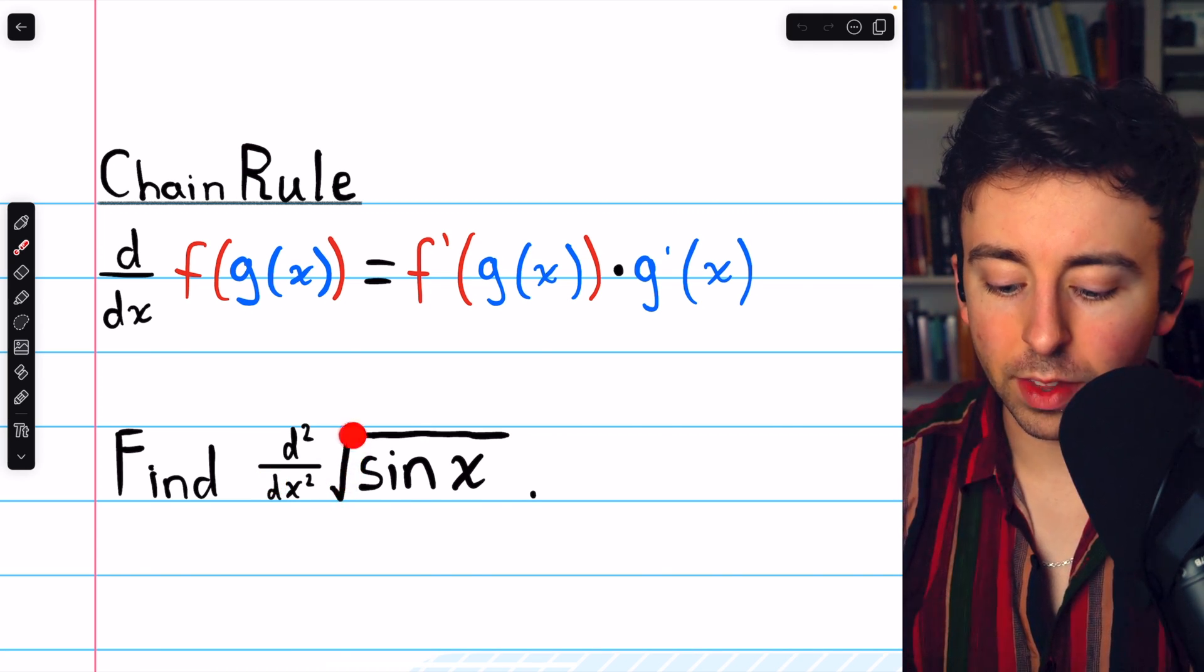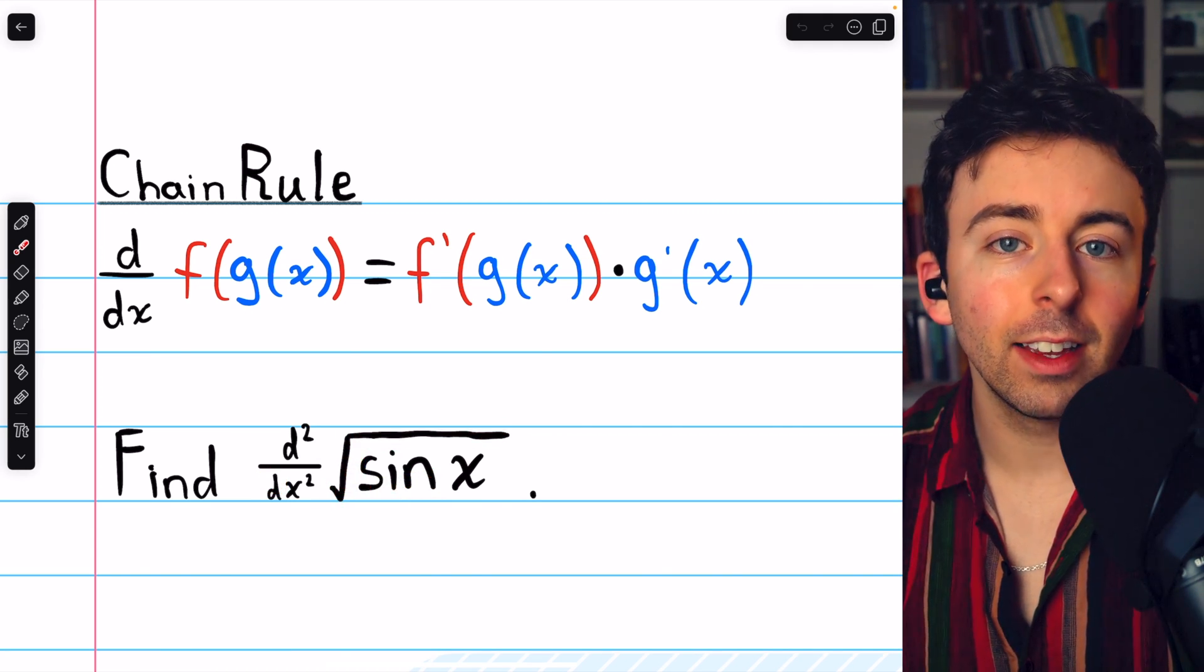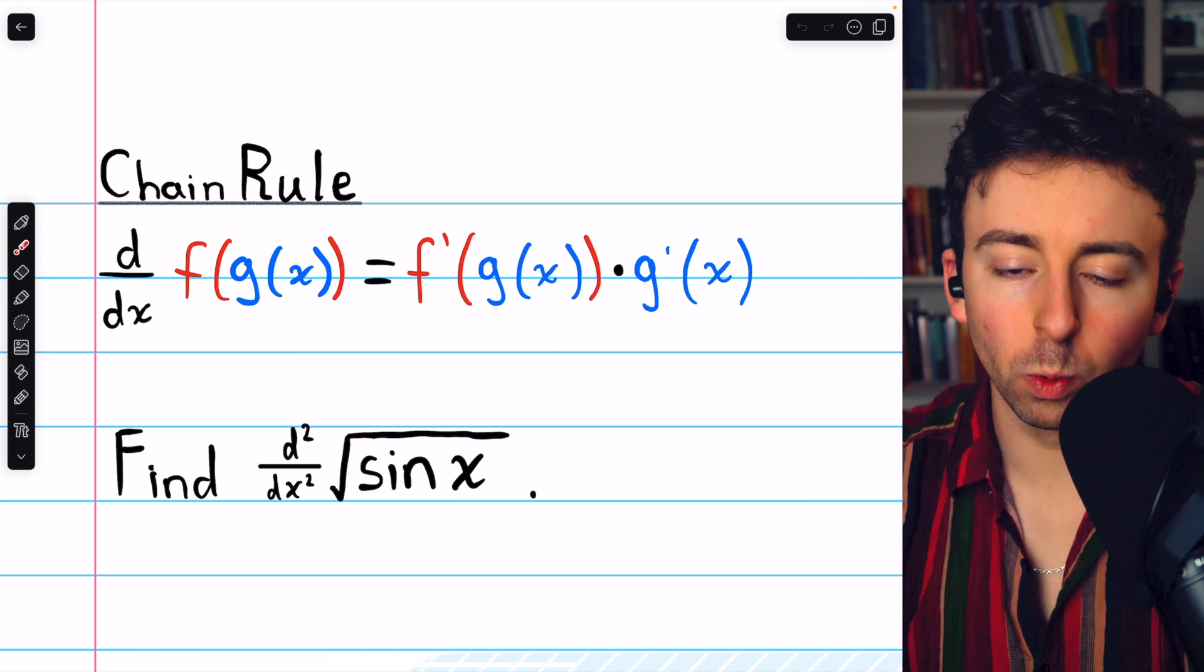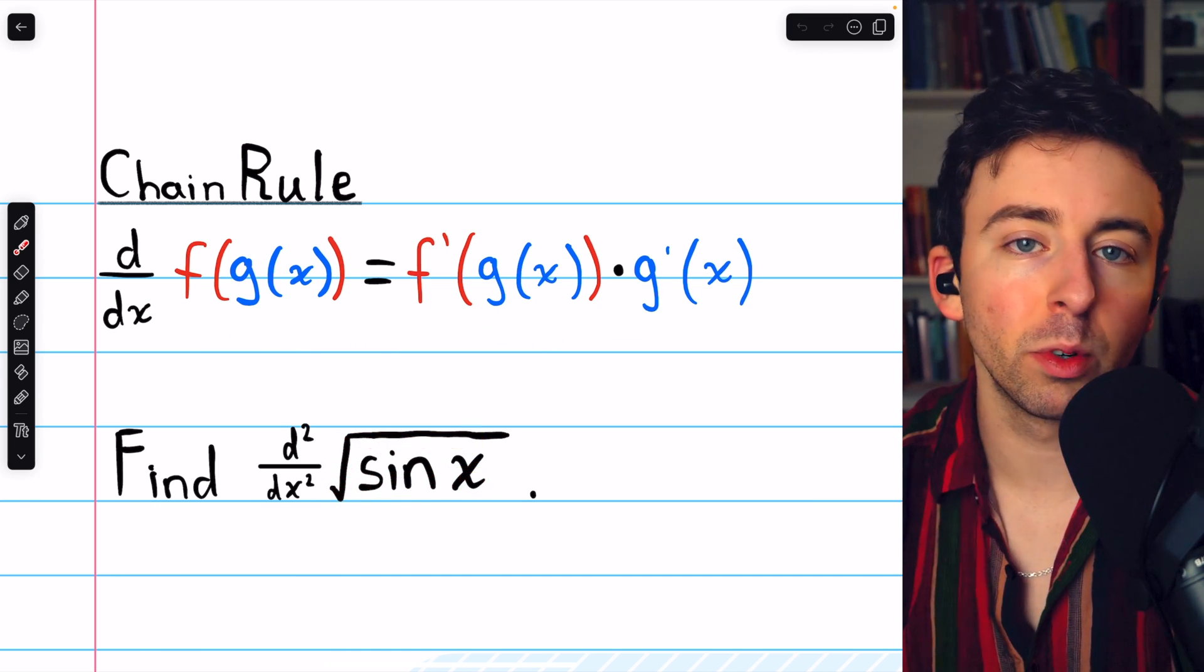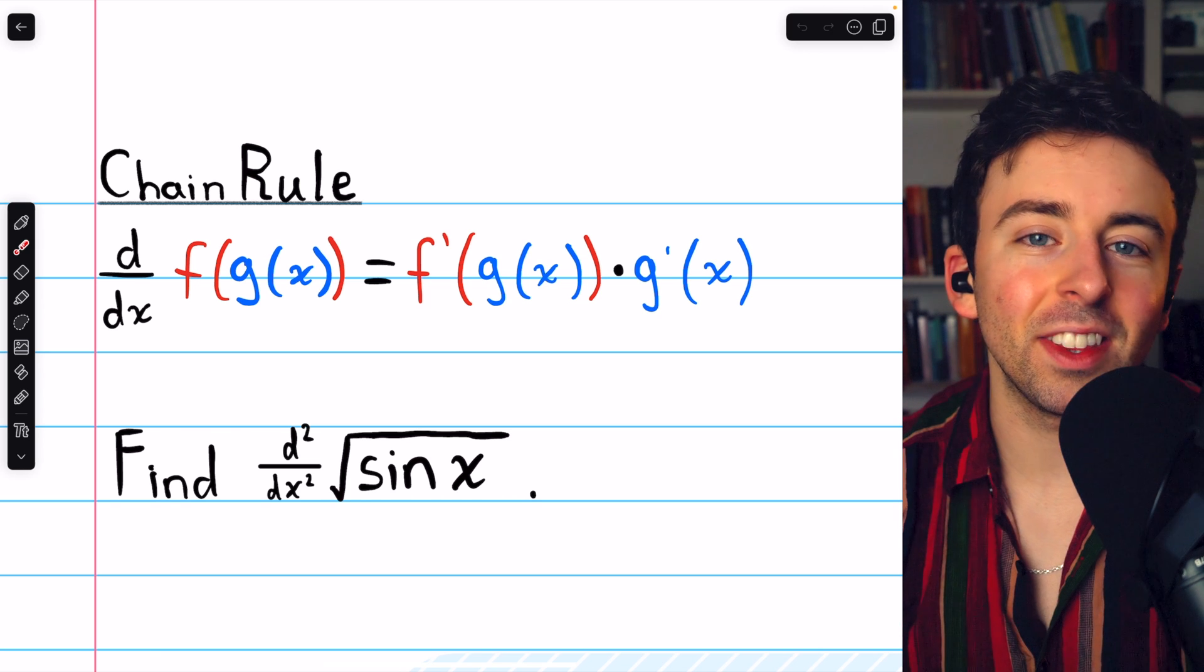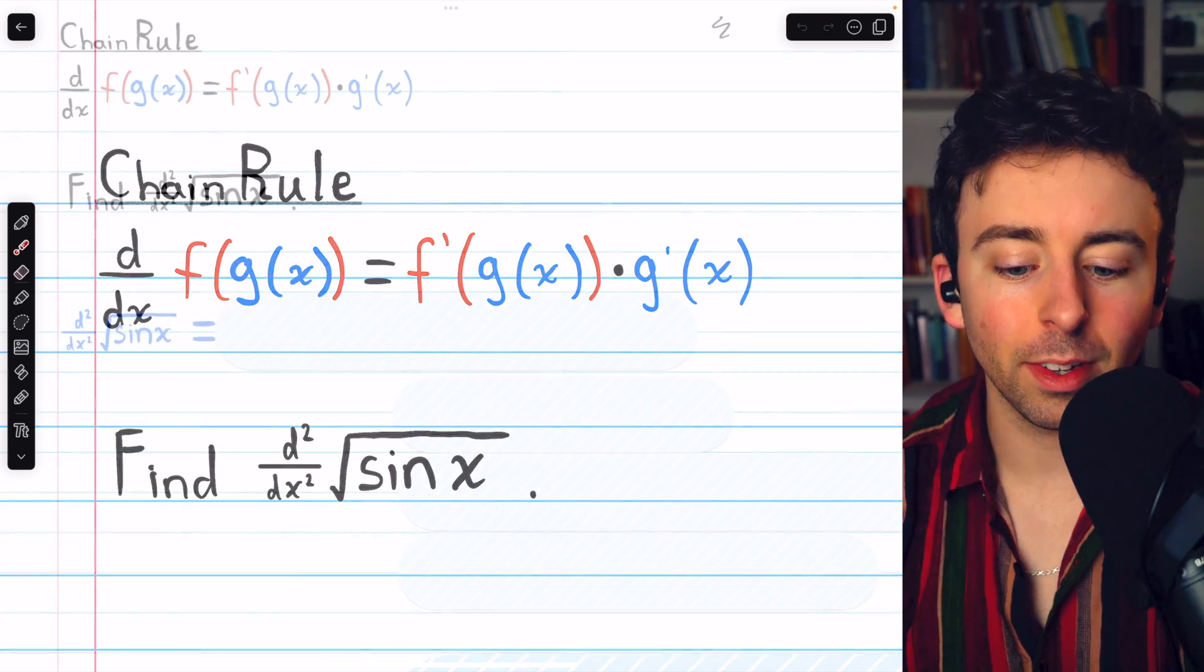Finding the second derivative of the square root of sine x is going to require the chain rule because it's a composite function, sine x inside the square root function. Then we're also going to need the product rule. Let's see how it goes.